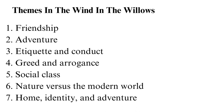Home, identity, and adventure is another theme. The homes of the main characters reflect their behaviour — for example, Toad's house is lavish, while Mole lives in a neat home. These differences show what each character values, such as how Rat is poetic and keeps a neat house close to the river, but it is not practical due to flooding. A home is simply a place where the animals feel comfortable enough to be themselves, but they often seek out adventures outside these safe spaces.